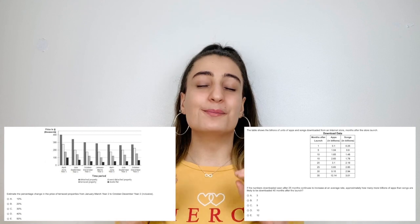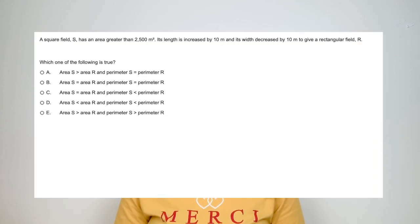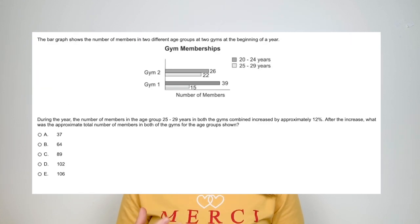Most of the quantitative reasoning questions will be in the form of manipulating data given to you in graphs or tables, so make sure you practice this as much as you can. Alongside this, make sure you practice questions that include currency conversions, interest rates, percentage changes, ratios, speed-distance-time graphs, areas, volumes, and averages such as mean, mode, median and range. Make sure you practice these as much as you can because this is what is most likely going to come up in your exam.